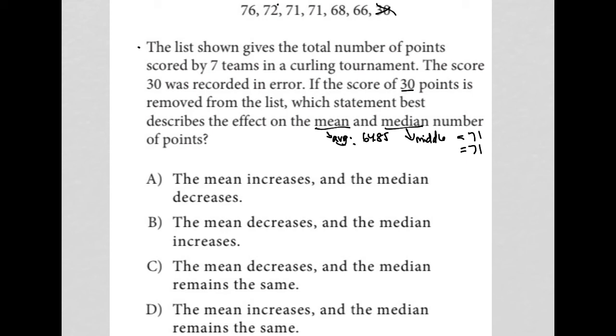Choice A says the mean increases - that's true - and the median decreases - that's not true, so A is gone. B: the mean decreases - that's not true, so B is gone. Choice C: the mean decreases - that's also not true. Choice D, which must be the correct answer: the mean increases - that's true - and the median remains the same - that's also true. Therefore, choice D is the best answer.